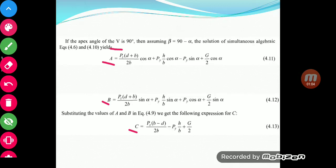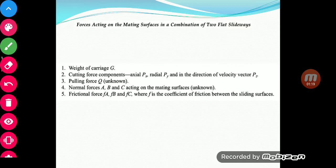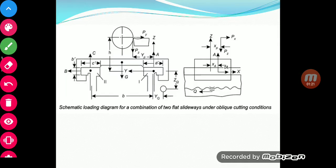We also assumed that the angle of the V is 90 degrees and therefore, that helped the solution where beta became equal to 90 minus alpha. So today's session, we will go ahead and discuss another type of flat sideway, guideway. This is called a flat flat type of a guideway.